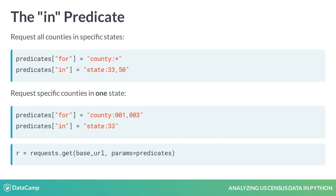After the IN predicate has been assigned, use request.get to return a response object, the same as before.